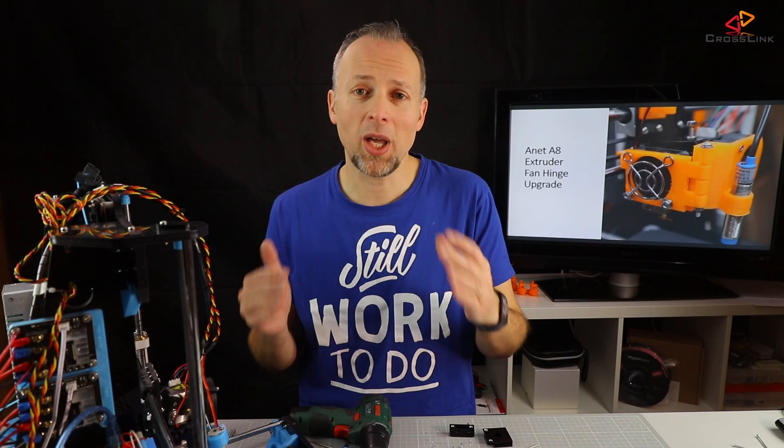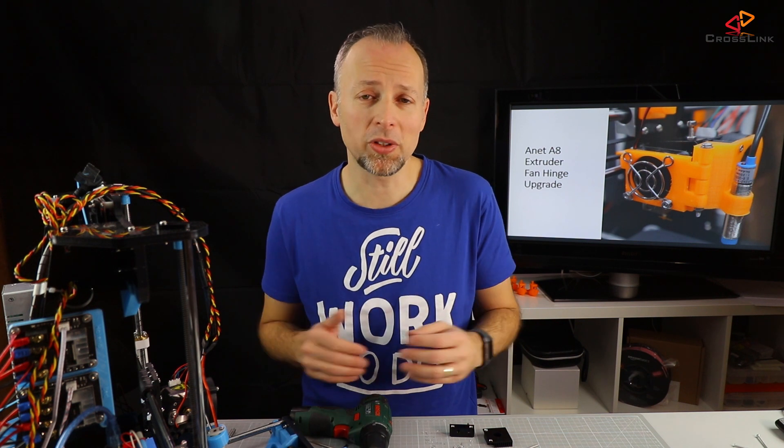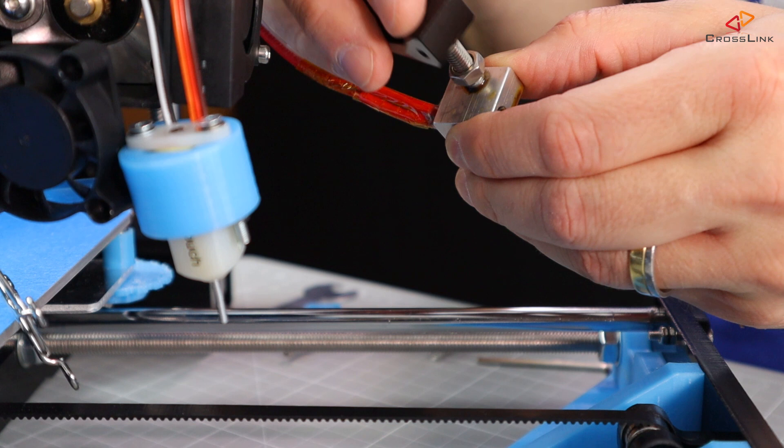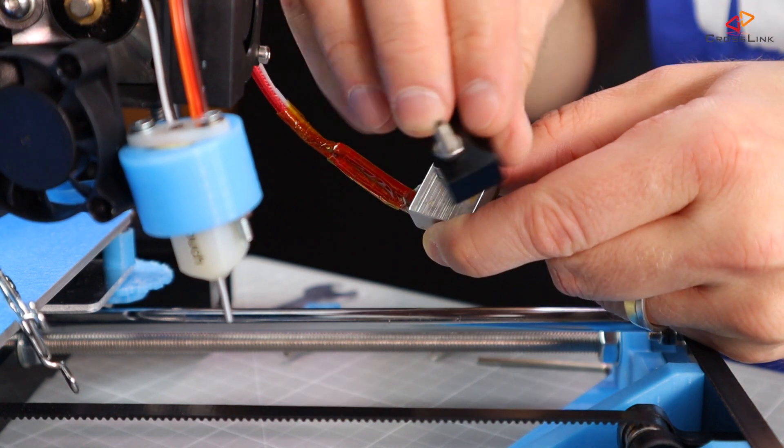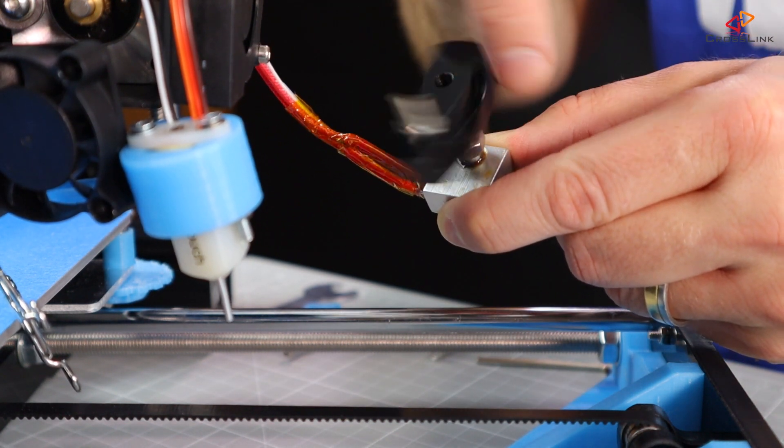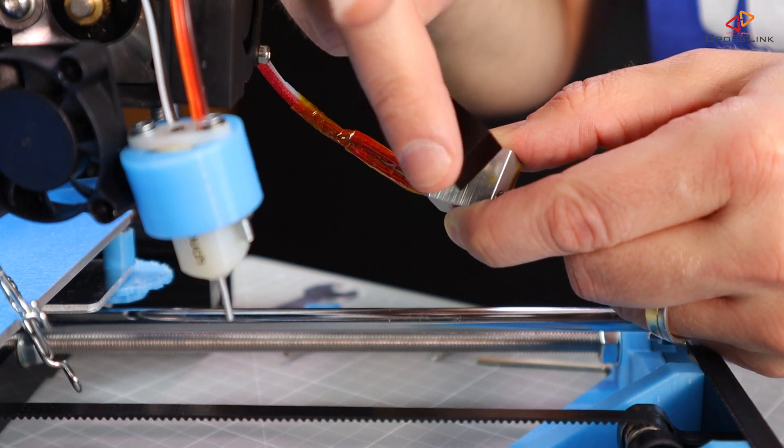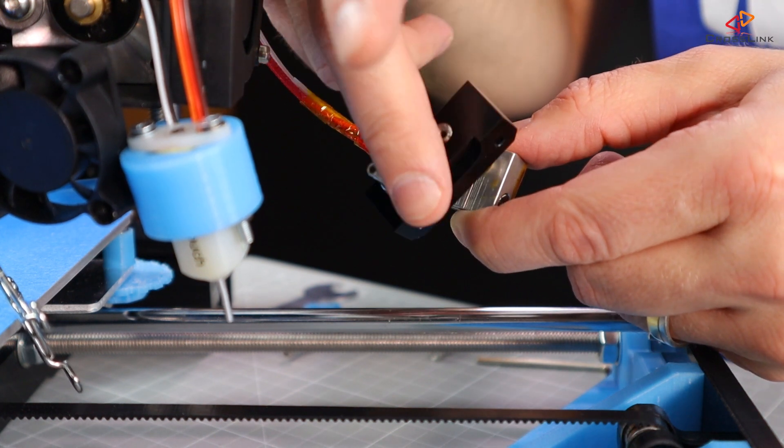So we're basically ready to mount everything back together in the reverse order, so let's start doing that. Starting with the extruder block, we will screw that back onto the extruder thread. Make sure that the upper end of the block is even with the throat end.